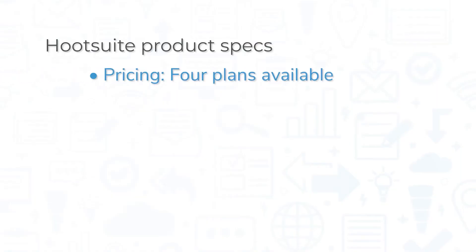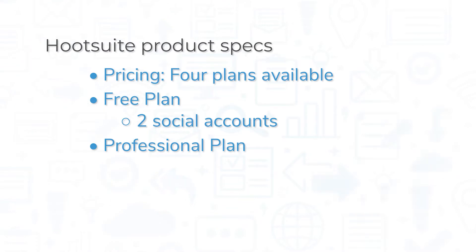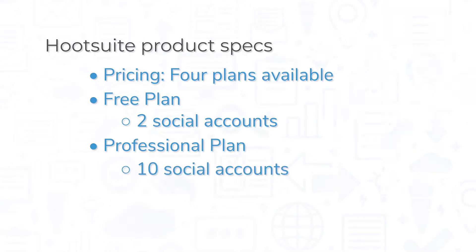Hootsuite has four plans available. It offers a free plan that includes two social accounts and up to five scheduled messages at any given time. Hootsuite's paid plans start with the professional plan, which allows up to 10 social accounts and unlimited scheduled posts. In addition, Hootsuite offers a 30-day free trial.